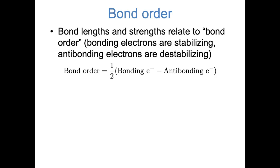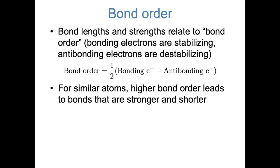To understand why the neutral molecule has the shortest bond, I'd like to introduce the concept of bond order. Bond order is essentially the number of bonds between two atoms. In the past, when you've drawn Lewis structures with single, double, and triple bonds, those correspond to bond orders of 1, 2, and 3. In a molecular orbital diagram, antibonding electrons cancel out bonding electrons. The formula for bond order is: bond order equals one-half times the number of bonding electrons minus the number of antibonding electrons. According to this formula, two bonding electrons constitute a bond, and antibonding electrons cancel out bonding electrons, making bonds weaker. Higher bond order leads to bonds that are stronger and shorter.